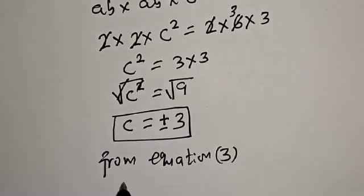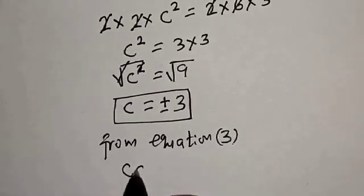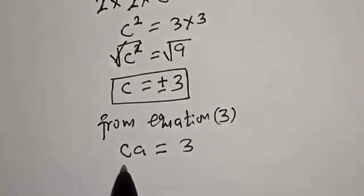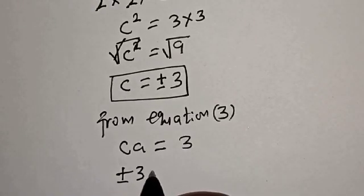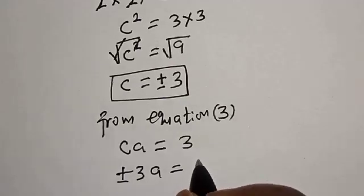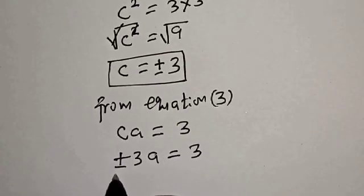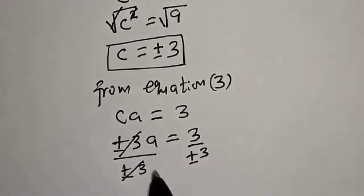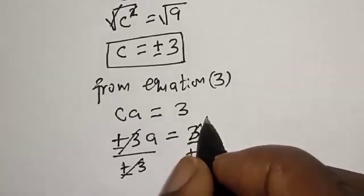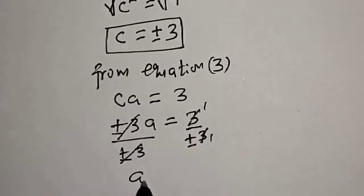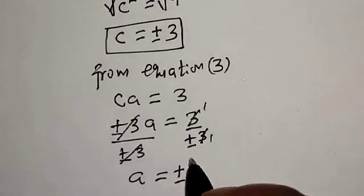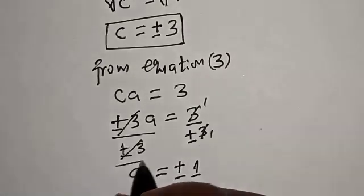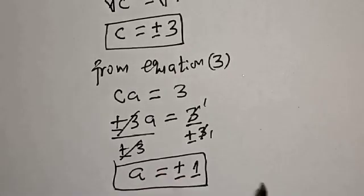From equation 3, ca is equal to 3. We know c is plus or minus 3, so plus or minus 3 multiplied by a is equal to 3. Dividing both sides by plus or minus 3, a is equal to plus or minus 1. That is the value of a.